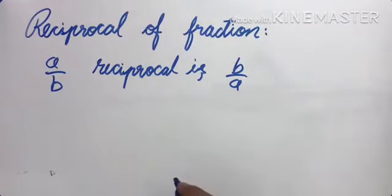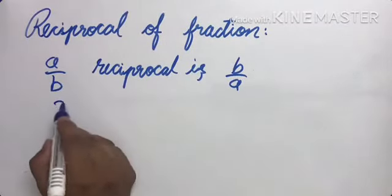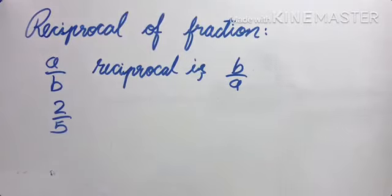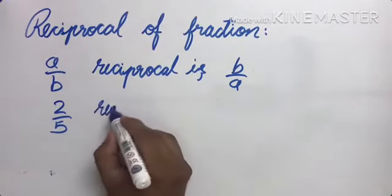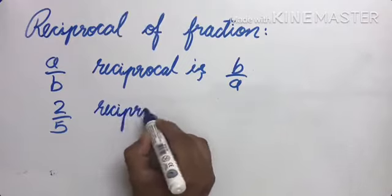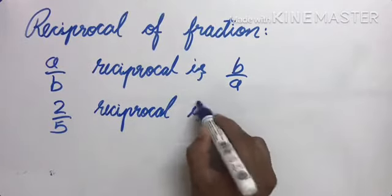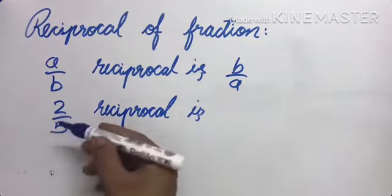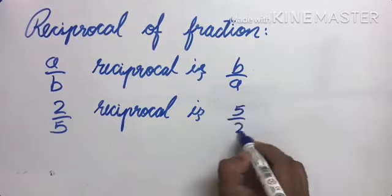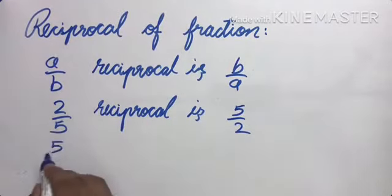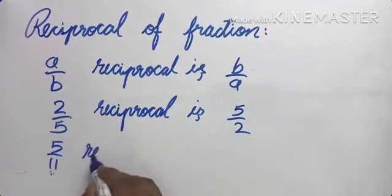इसको बोलते हैं reciprocal। अभी suppose 2 by 5 है तो 2 by 5 का reciprocal क्या होगा? Reciprocal is — इसको उल्टा कर देना है — 5 by 2। अगर 5 by 11 है तो इसका reciprocal क्या होगा?